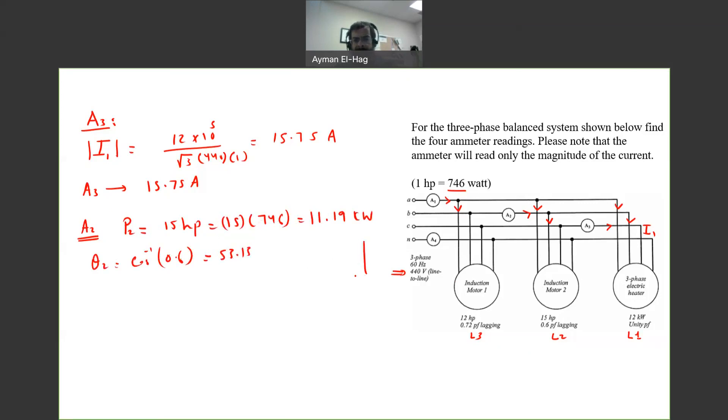Using the power triangle that we used a lot: this is your S, this is your P, this is your Q, and this is your theta. Q2 is equal to P2 tan theta 2. Just substitute with P2 and tan theta 2, you get Q2 equal to 14.92 kVAR.